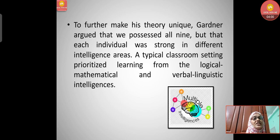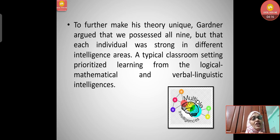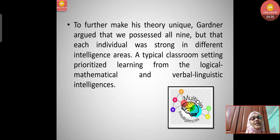To further make his theory unique, Gardner argued that we all possess all nine intelligences, but that each individual is strong in different areas. Not all nine intelligences are equally strong in one person — one person may excel in one area while another may excel elsewhere. A typical classroom setting prioritizes learning from the logical-mathematical and verbal-linguistic intelligences.